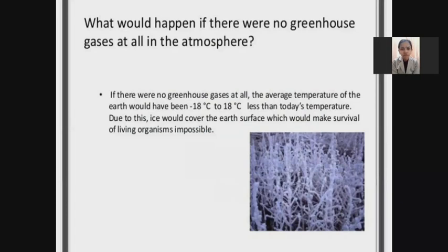What would happen if there were no greenhouse gases at all in the atmosphere? If there were no greenhouse gases, the average temperature of the earth would have been minus 18 degrees Celsius — 18 degrees less than today's temperature. Due to this, ice would cover the earth's surface, making the survival of living organisms impossible.